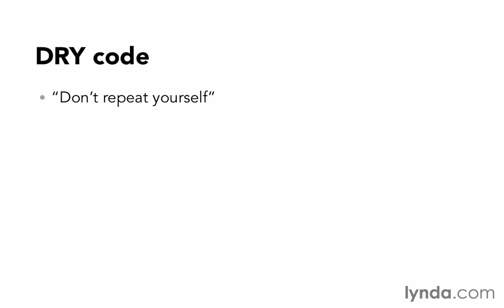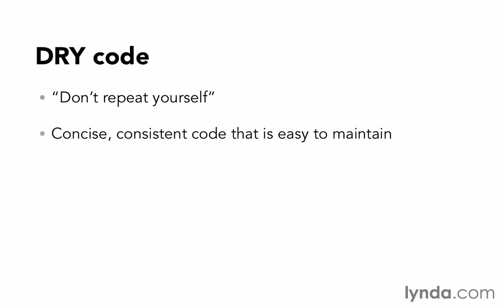The easiest code to maintain is going to be DRY code, because duplication can lead to inconsistency, can make our code unclear, and can make it harder to maintain and update. So if we follow the DRY principle, we're going to end up with concise, consistent code that's easy to maintain.